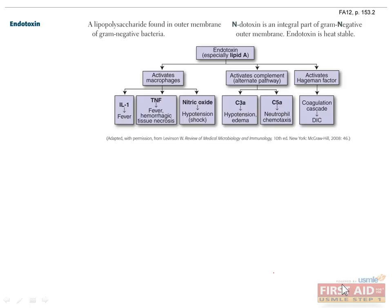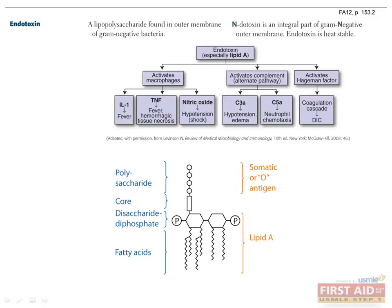Endotoxins are responsible for many of the deleterious effects of gram-negative bacteria. The LPS endotoxin consists of a polysaccharide chain and a lipid moiety, which is usually Lipid A. Lipid A is responsible for the toxic effects of gram-negative bacteria, which are listed here in this diagram.